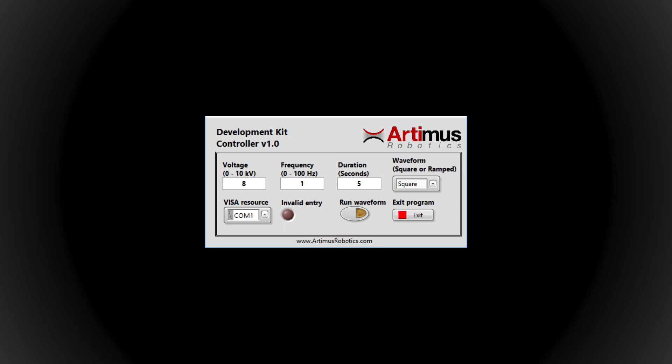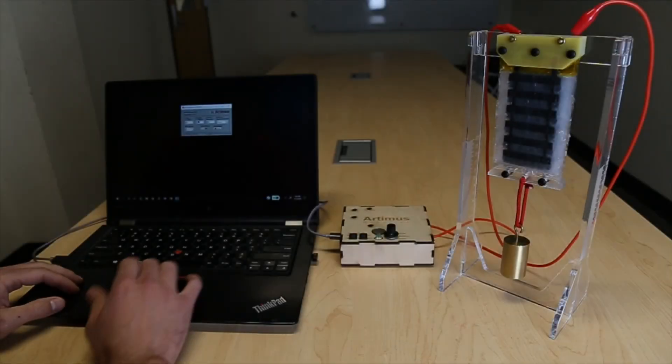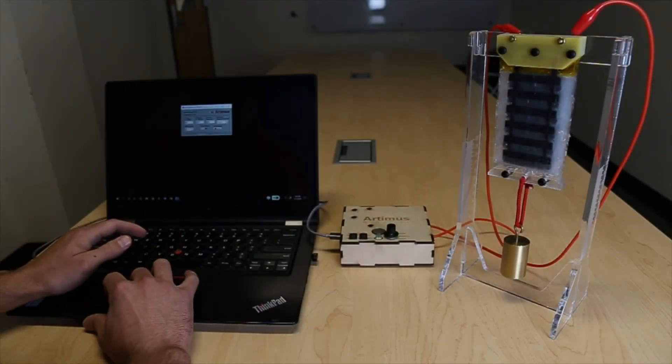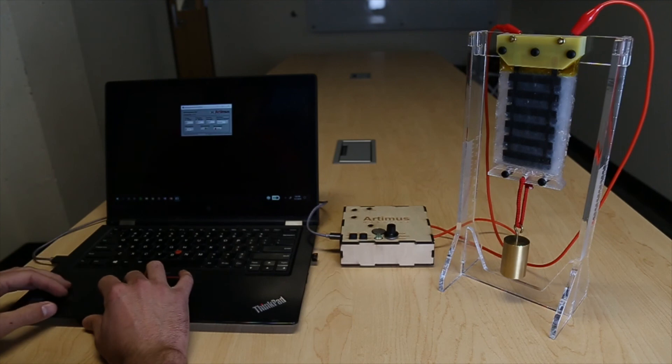For example, if you want to operate the Hazel Actuator at 8 kilovolts with a square wave of 0.5 hertz for 5 seconds, you simply input your desired parameters and press run waveform. Controlling the Hazel Actuators with this program allows wide exploration of the capabilities of Hazel Actuators.